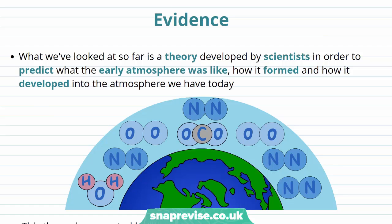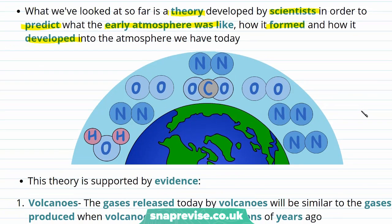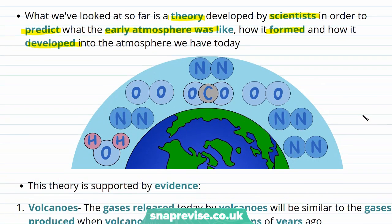The atmosphere formed long before any humans were around to observe it. Therefore, scientists need to develop a theory to explain or predict what the early atmosphere was like, how it formed, and how it developed into the atmosphere we have today. We can't directly observe what happened, so we need to look at evidence.